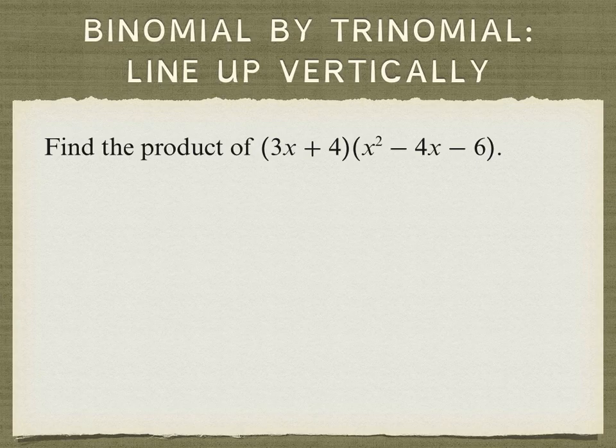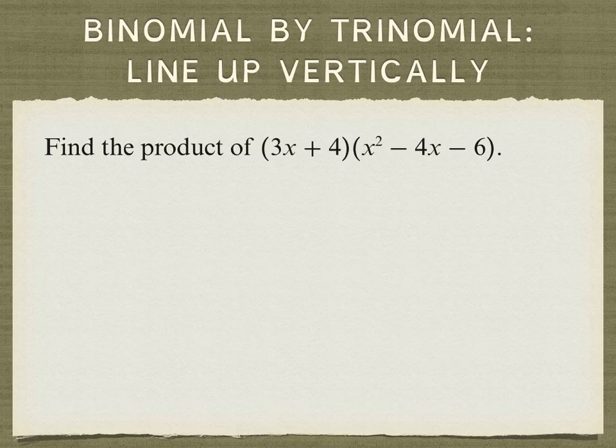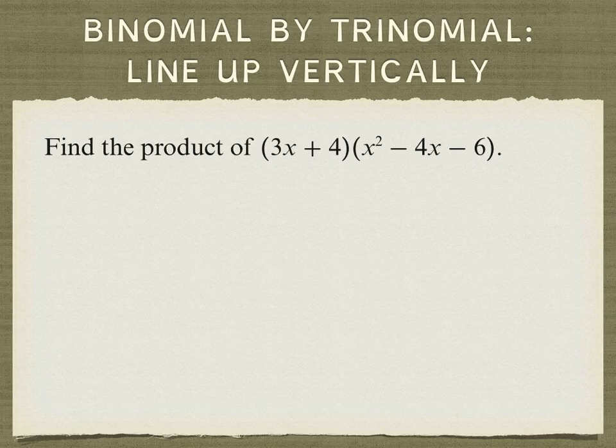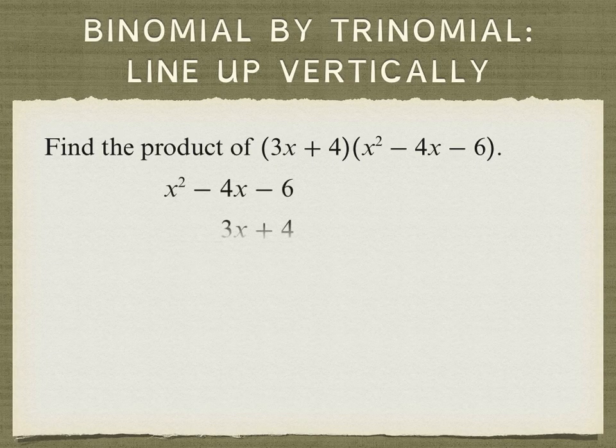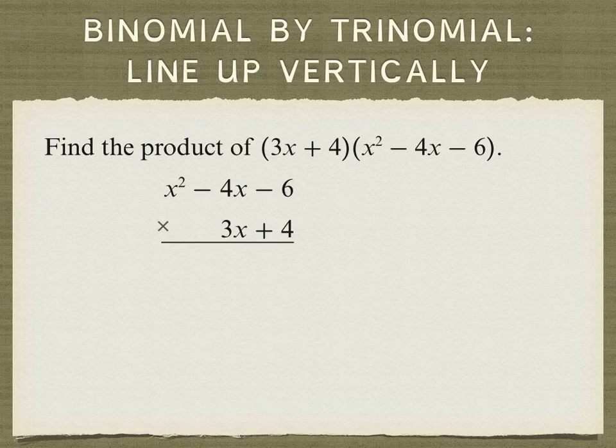So we can also line polynomials up vertically, as we do with the efficient algorithm when multiplying whole numbers together. With whole numbers we would put the number with more digits on top. So we will put the trinomial on top and line up the binomial underneath it, and we'll multiply these two together.